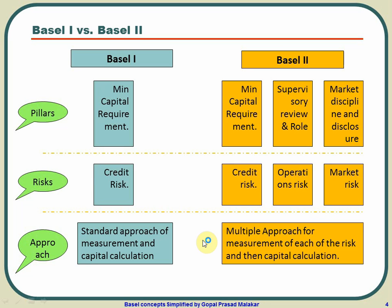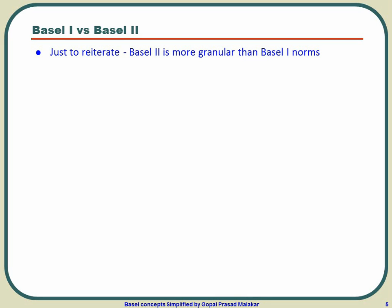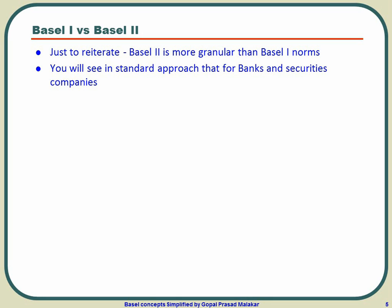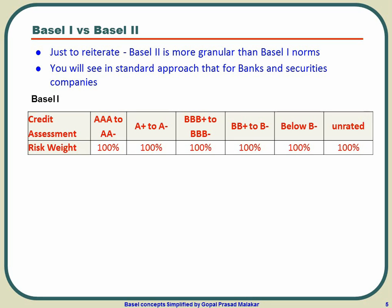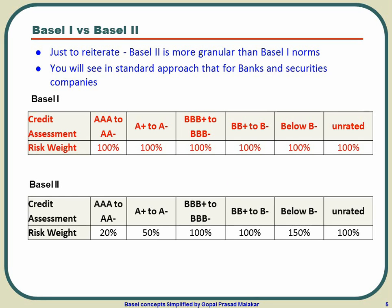So that's Basel 1 and Basel 2 side by side. Let me reiterate one particular point: Basel 2 is more granular than Basel 1. Even if you just look at the standard approach of Basel 2, you'll find a difference. In Basel 1, irrespective of the rating of the bank or corporate, you are supposed to keep 100% as the weightage and calculate 8% of that as the risk capital requirement. Whereas in Basel 2, the weightage goes from 20% to as high as 150%. So even in the standard approach, Basel 2 is far more granular than Basel 1.